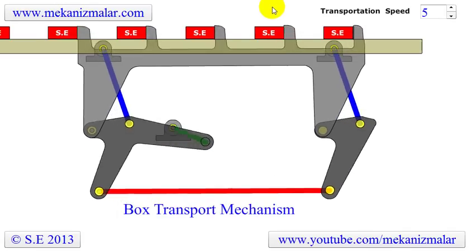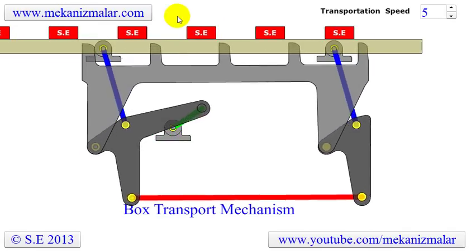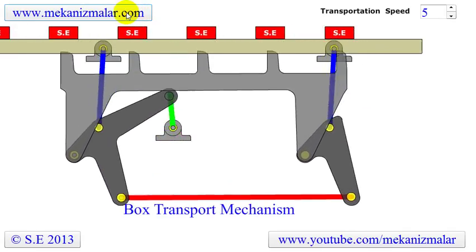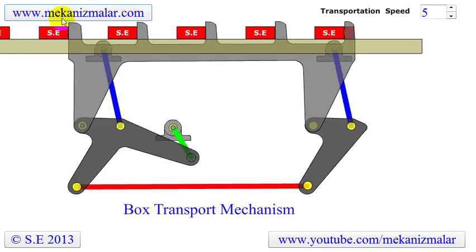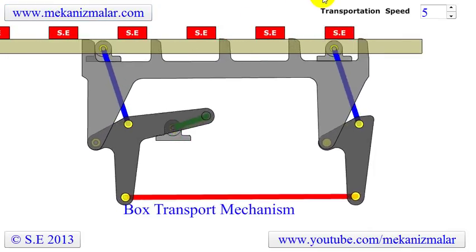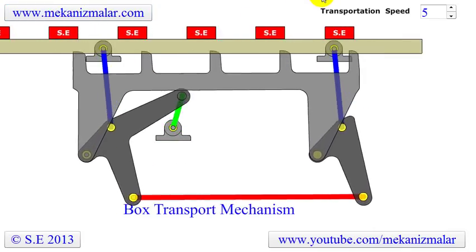There are four stations in here. There are four different operations on the box, such as putting the item, closing, sealing, and adding the labels to the box.